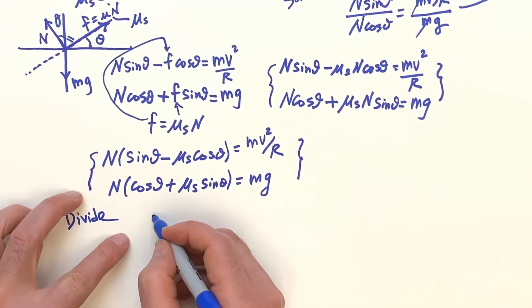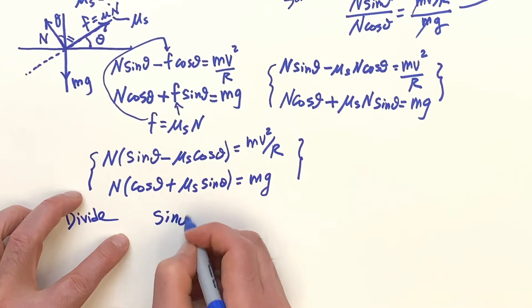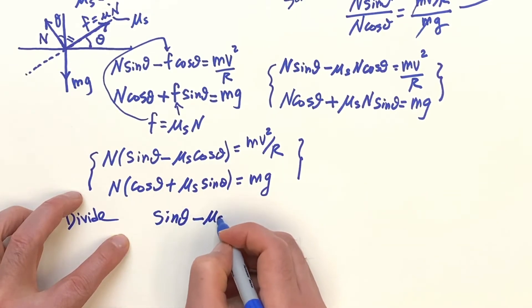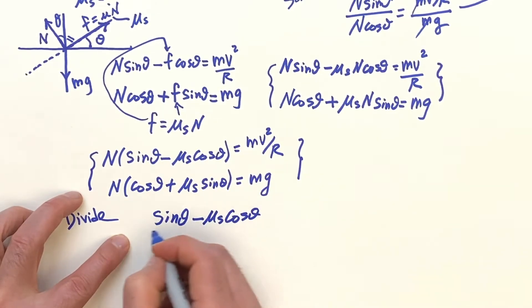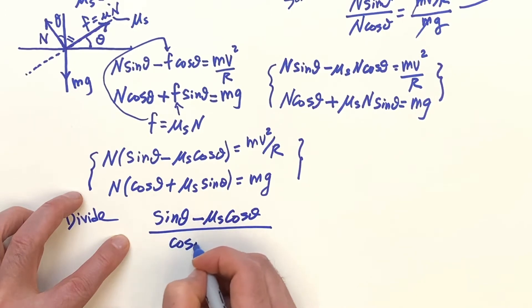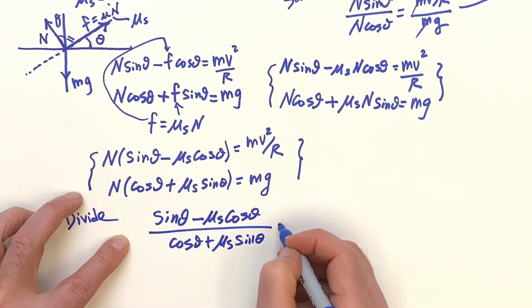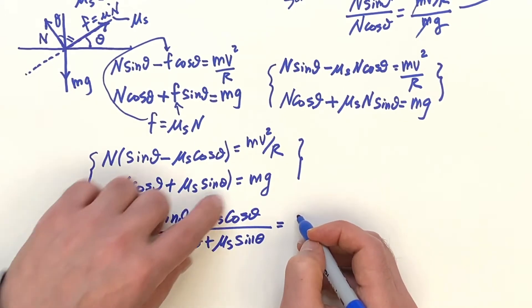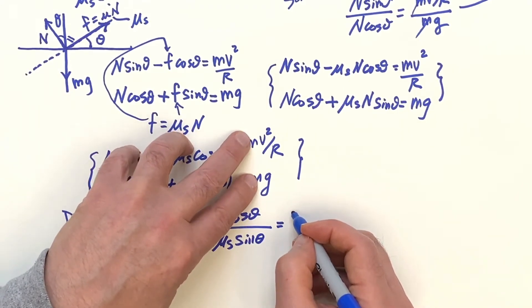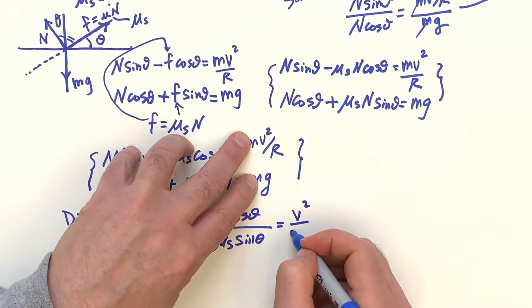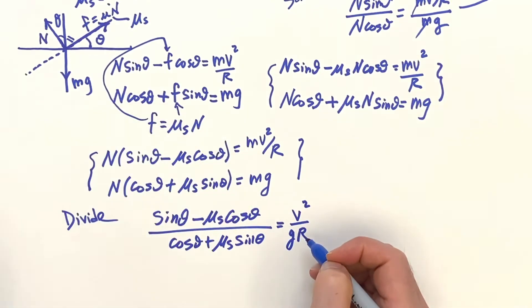divide the equations. So then we have the sine of theta minus Mu, S, cosine of theta over cosine theta plus Mu, S, sine of theta is equal to here, the M's cancel and you'll have V squared over the G's in the denominator, G, R.